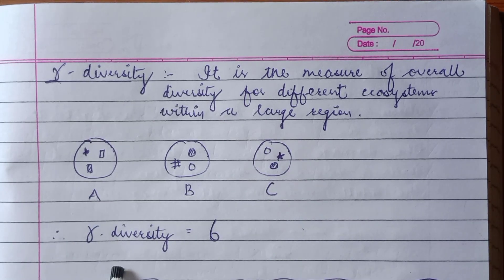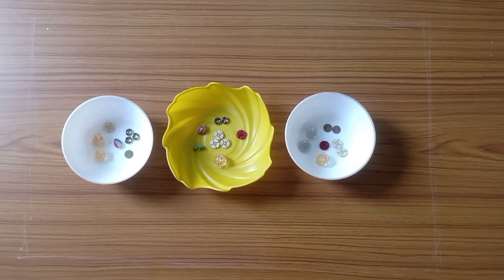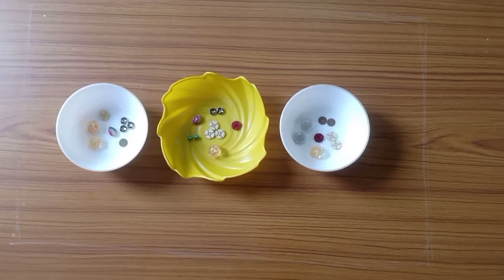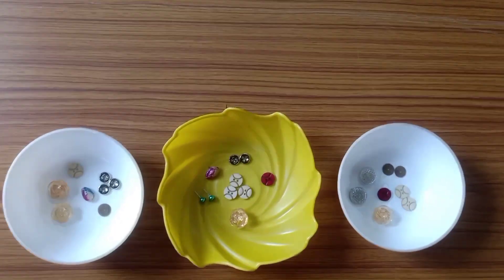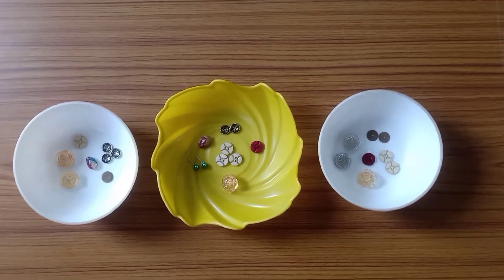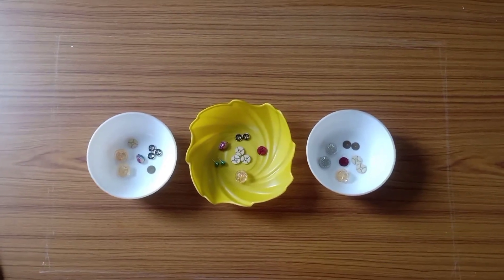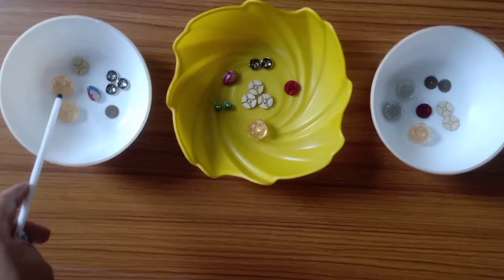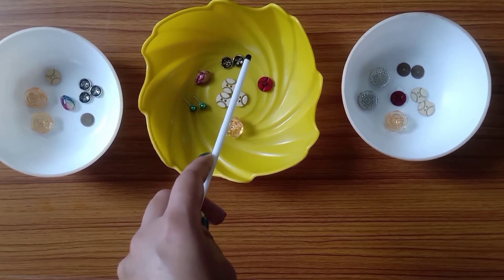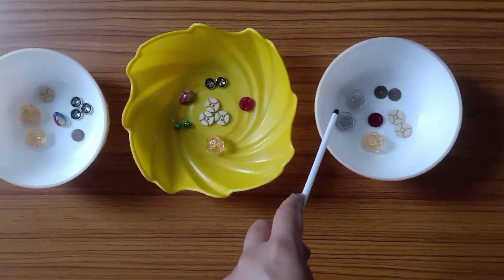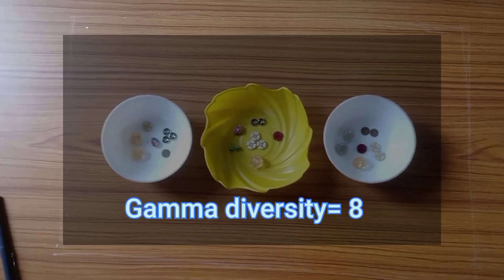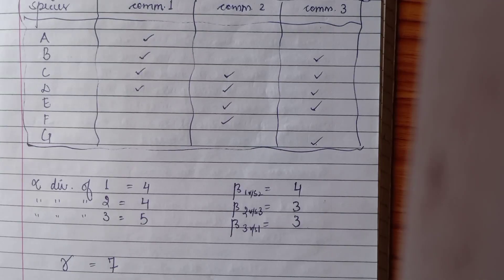Hence the gamma diversity of this region would be six. To explain gamma diversity further, I have created a large rectangular region containing different kinds of ecosystems — each bowl represents one ecosystem. We count the number of different unique species across every ecosystem inside the large region: 1, 2, 3, 4, 5, 6, 7 — and some are repeated — then 8. The total number of unique species across all ecosystems in this large region comes out to be eight, so the gamma diversity is eight.